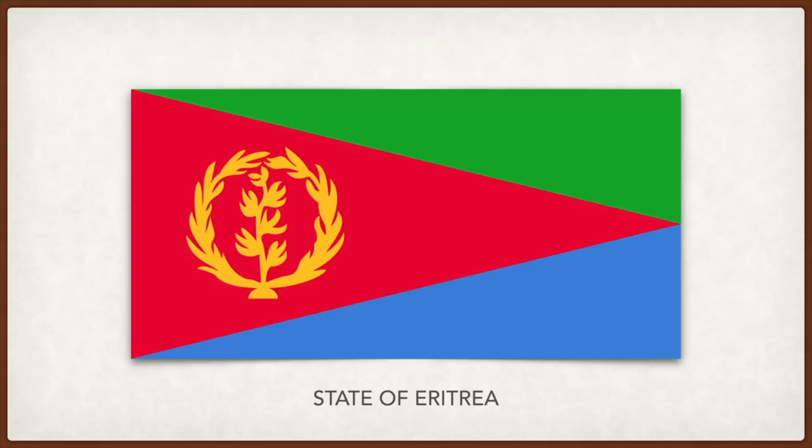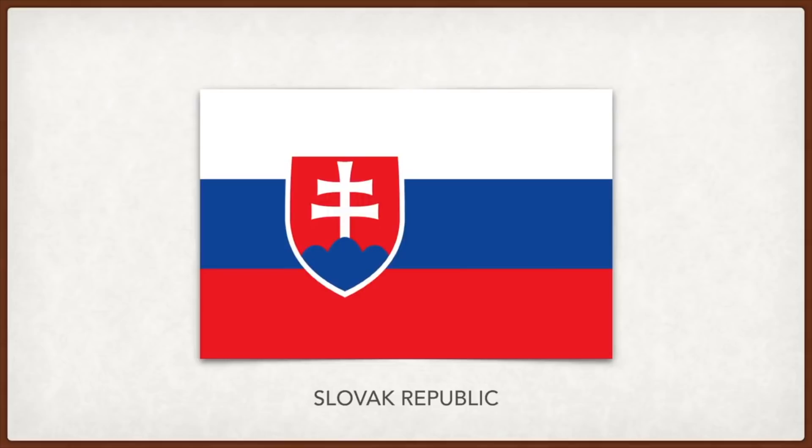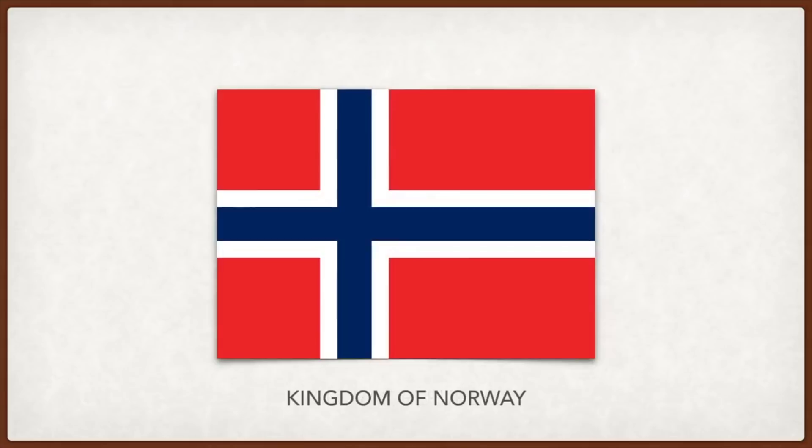Slovakia: the flag uses pan-Slavic colors of white, blue, and red. The coat of arms has ancient roots — the double-barred cross was used as early as the ninth-century Byzantine Empire. Norway: the cross, like other Nordic countries, represents Christianity; the red and blue represent Denmark and Sweden respectively, representing Norway's history with those two countries.